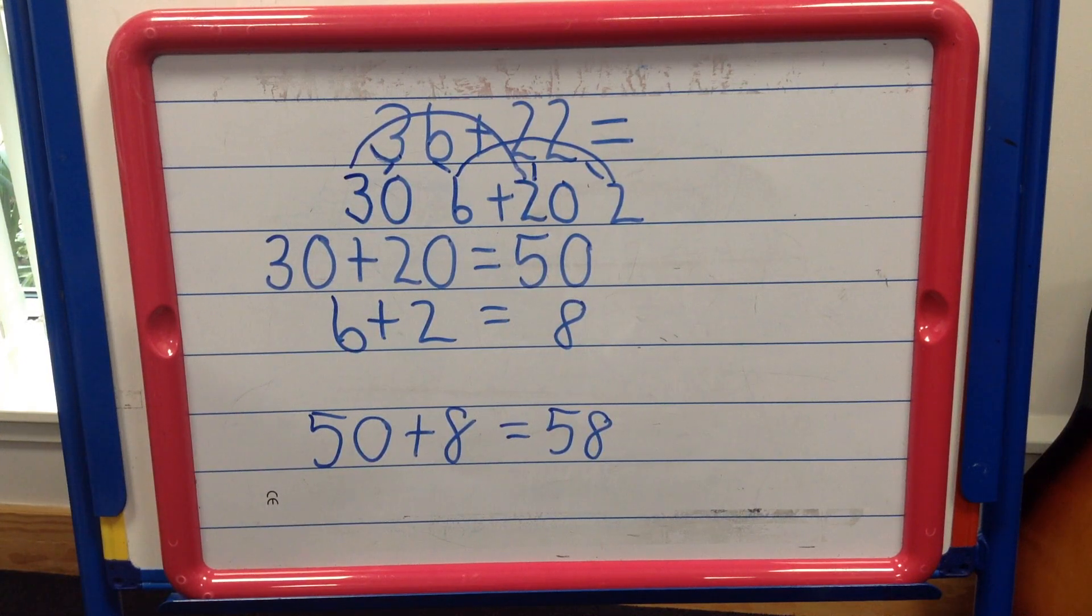And there you have it. How to use the NumberTalks strategy of breaking each number into its place value to support your child's learning in addition calculations. The strategy lends itself well to solving more challenging calculations incorporating hundreds and thousands.